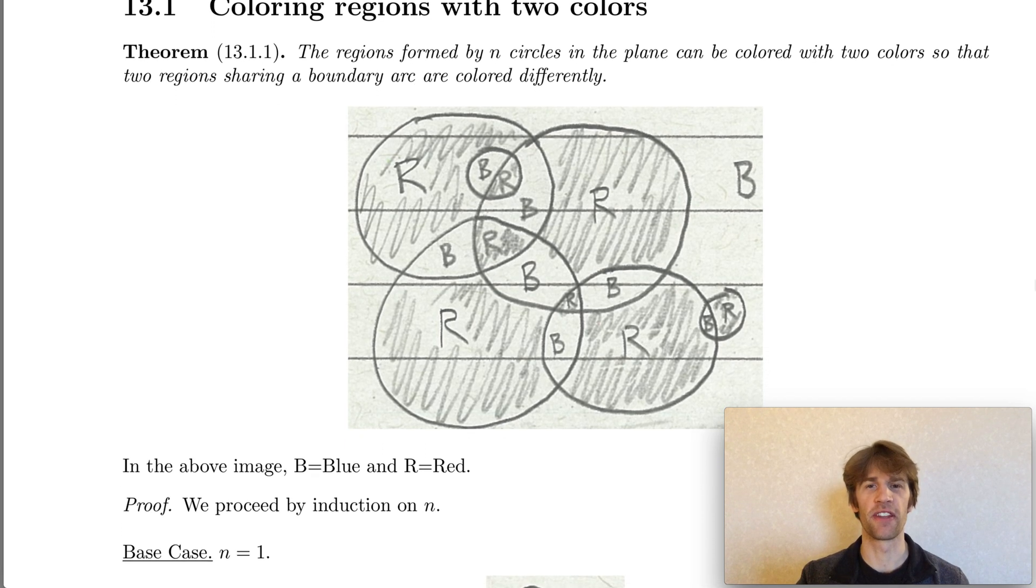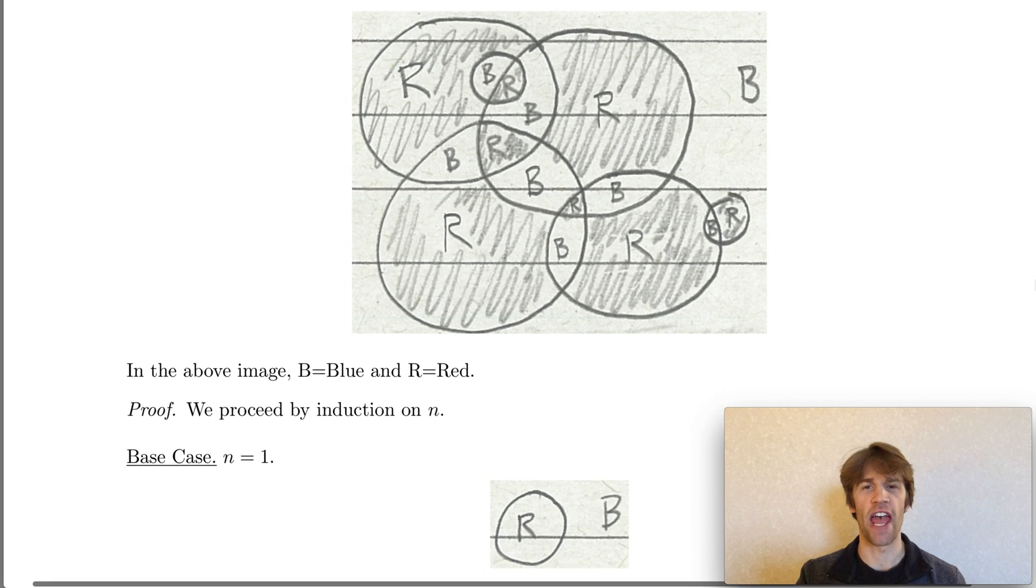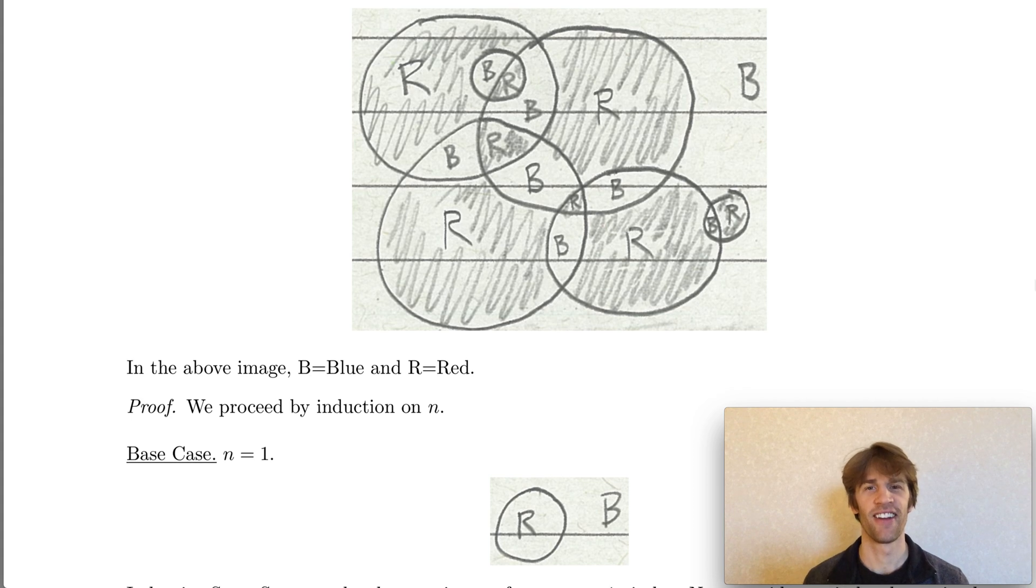For the proof of this theorem we'll proceed by induction on n, the number of circles. Our base case is when we've drawn n equals one circle in the plane. We have two resulting regions: inside the circle and outside the circle. We need to draw these two regions with different colors. We'll color red for inside the circle and the color blue for outside.